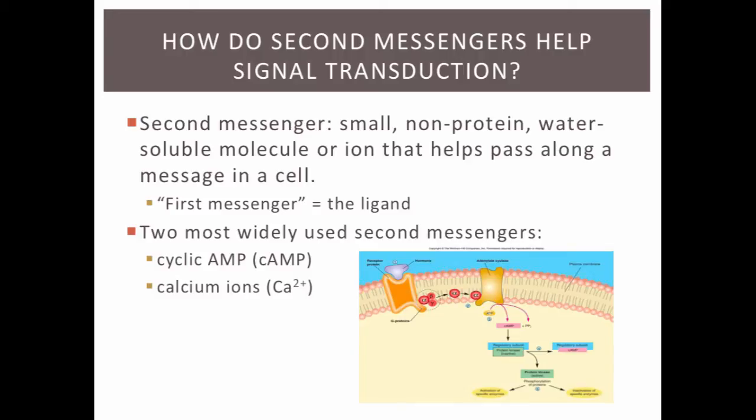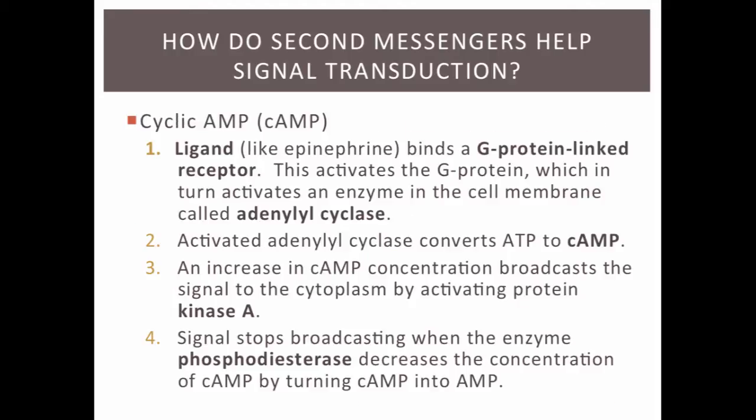Two commonly used second messengers are cyclic AMP, or cAMP for short, and calcium ions. Here's how cAMP works: the ligand or signaling molecule, such as epinephrine, will bind a G-protein linked receptor. This binding activates the G-protein, and in turn this activated G-protein then goes on and activates another enzyme that's embedded in the plasma membrane, known as adenylyl cyclase. When adenylyl cyclase is activated, it converts ATP to cyclic AMP, or cAMP.